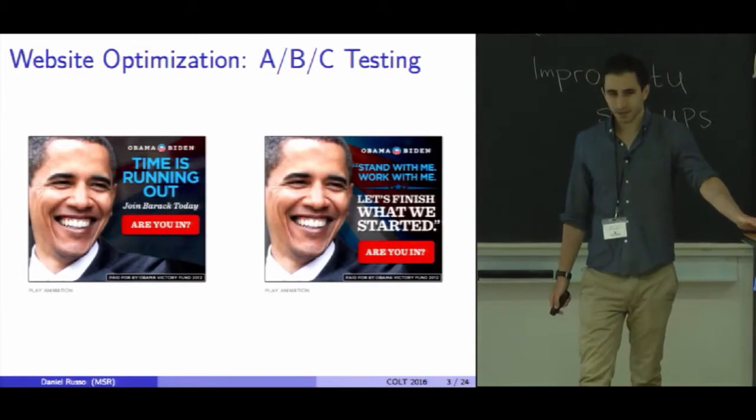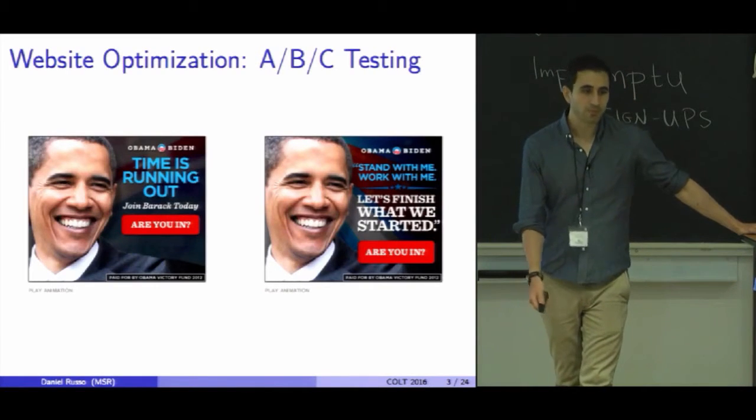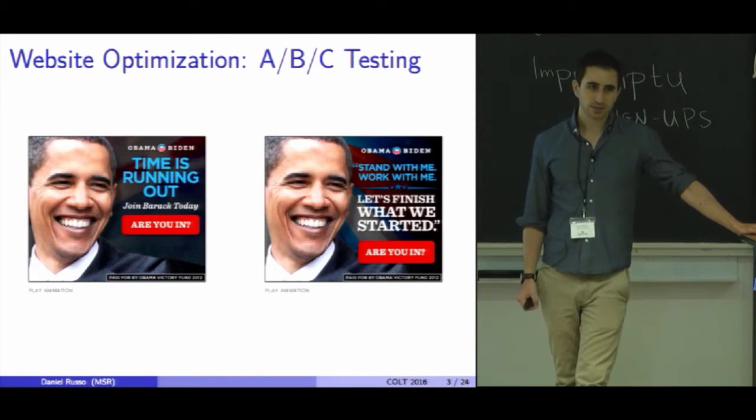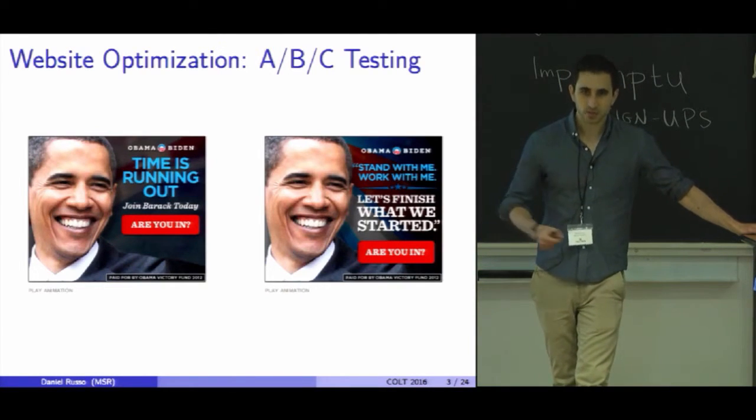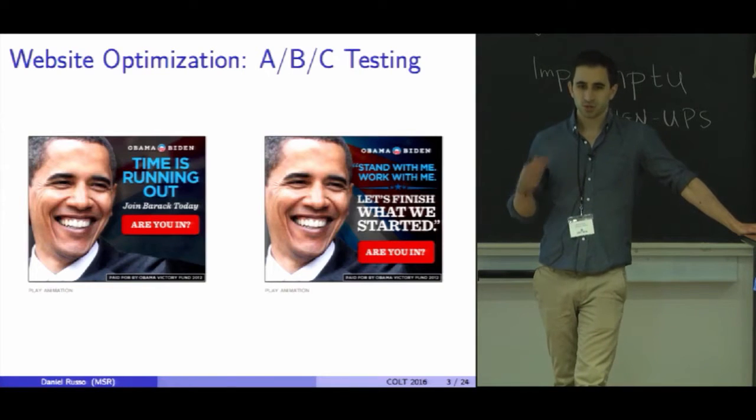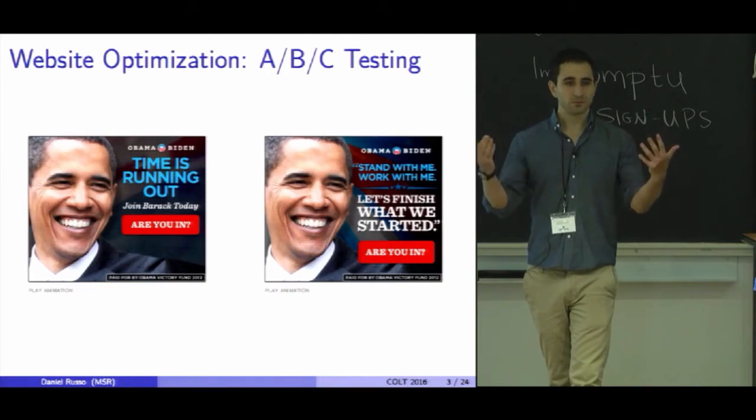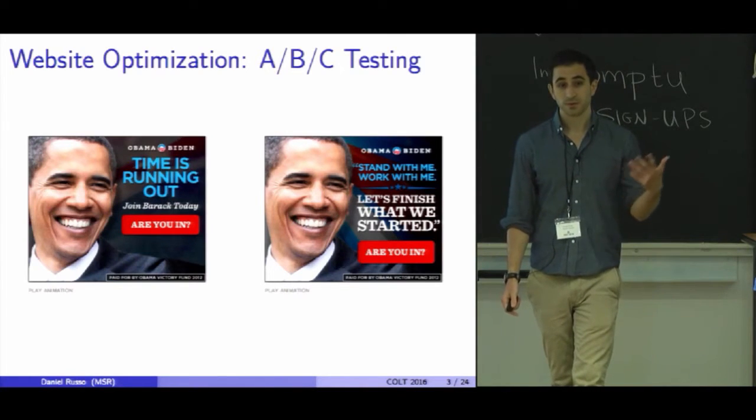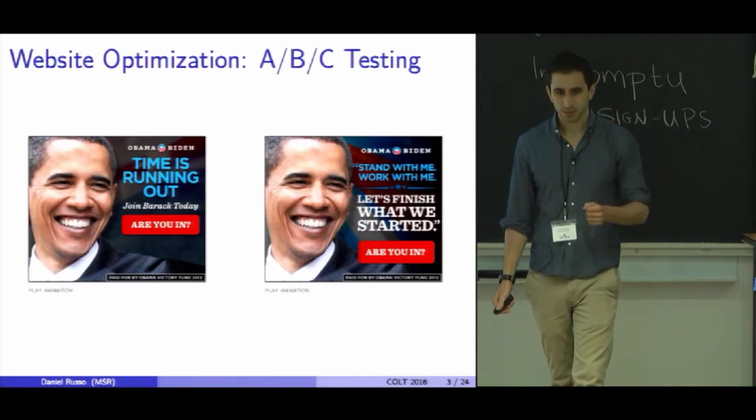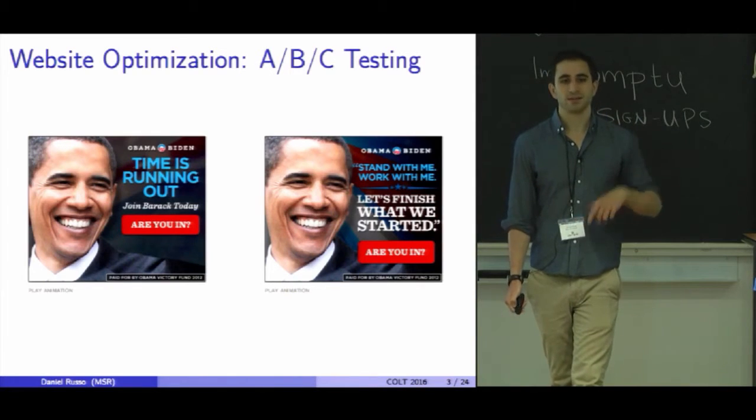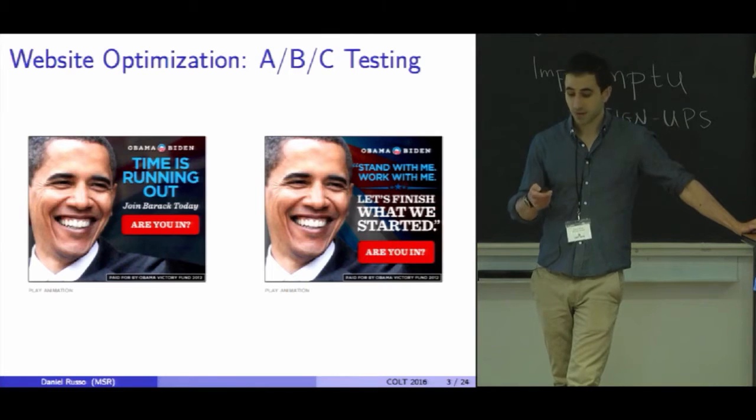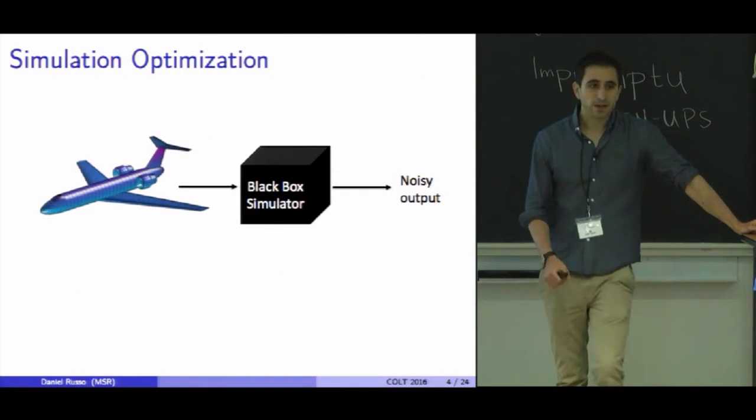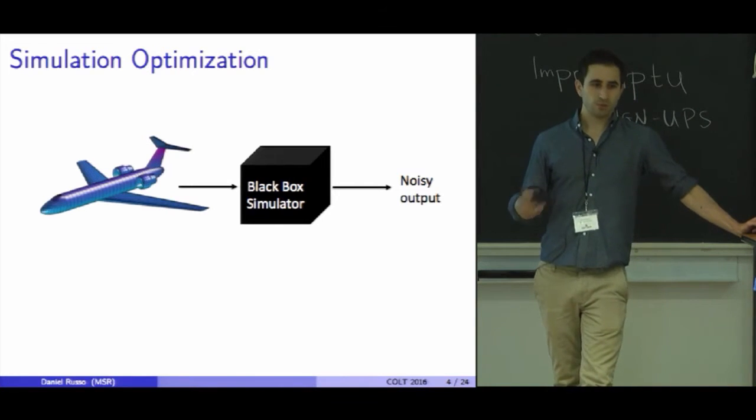Two motivating examples for me. One will come from the problem of website optimization. We have many banner ads like this. We'd like to choose which one we should display on our website. So we show different versions of this banner ad to different users, we observe which one has the highest click-through rate, and we want to show that for some subsequent period. That's an example where we're experimenting in the real world.